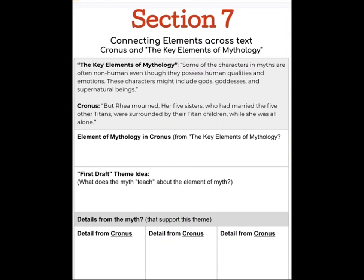The Key Elements of Mythology says some of the characters in myths are often non-human, even though they possess human qualities and emotions. These characters may include gods, goddesses, and supernatural beings. We saw a lot of that in Cronus where they have different human qualities, but also qualities that are not necessarily human. Let's see which ones are similar to this statement about human qualities and emotions.